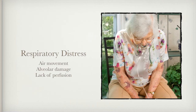Respiratory distress is a term we use for somebody having difficulty breathing who is still able to get enough oxygen in and CO2 out of the body. If we don't have proper air movement — like if she was choking on something — then she'd be in respiratory distress, then go into respiratory failure, then cardiopulmonary failure, then cardiac arrest.